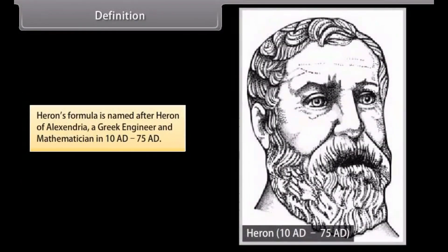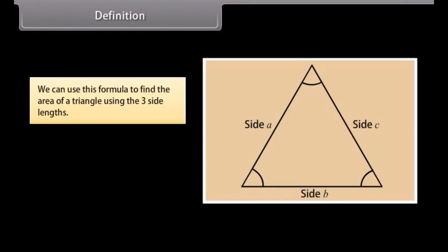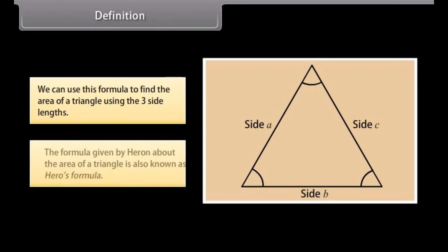Heron's formula is named after Heron of Alexandria, a Greek engineer and mathematician in 10 AD to 75 AD. We can use this formula to find the area of a triangle using the three side lengths. The formula given by Heron about the area of a triangle is also known as Heron's formula.